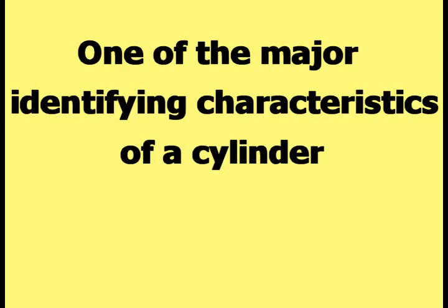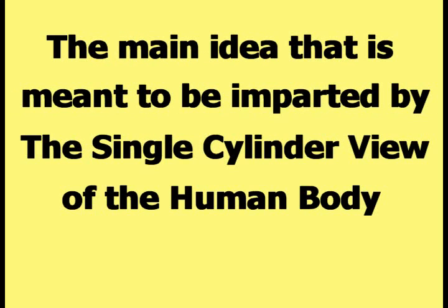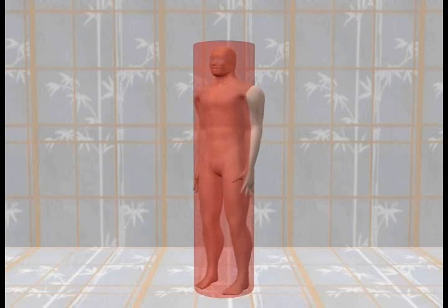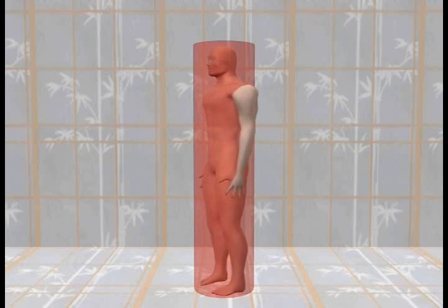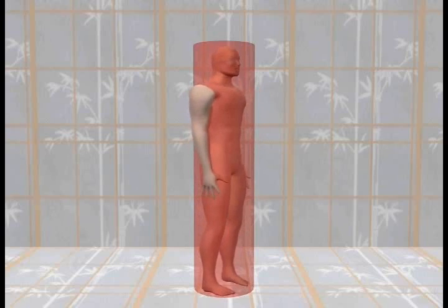One of the major identifying characteristics of a cylinder is that it naturally rotates because it is circular. The main idea meant to be imparted by the single cylinder view of the human body is that the human body can rotate like a cylinder. As shown in this animation, the entire body can rotate to the right or to the left.